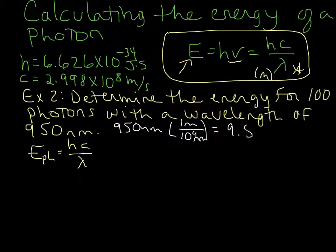And we're going to end up with 9.50 times 10 to the negative 7 meters. So now we have our wavelength in the appropriate units.